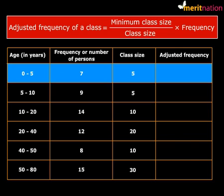For the first row, 0 to 5 age group, the adjusted frequency is minimum class size, which is 5, divided by the class size. In this case, that is also 5, so 5 by 5 into frequency, which is 7. So we get our adjusted frequency as 7.